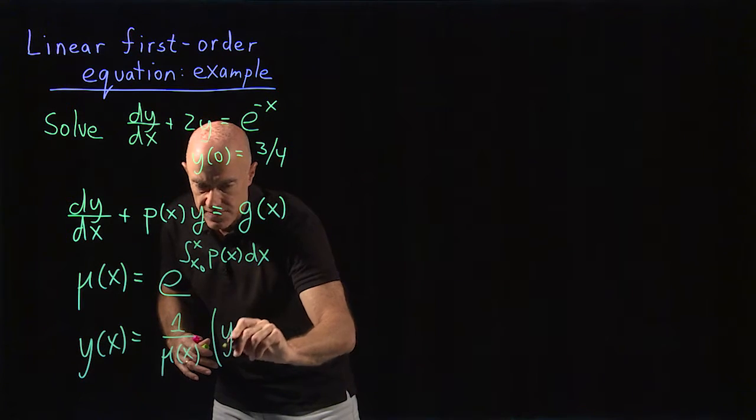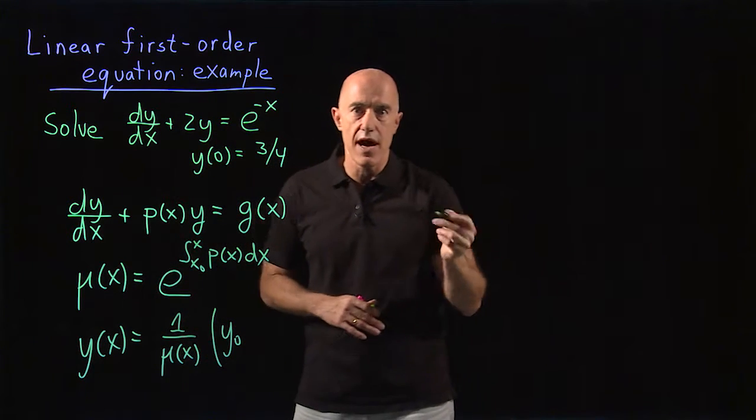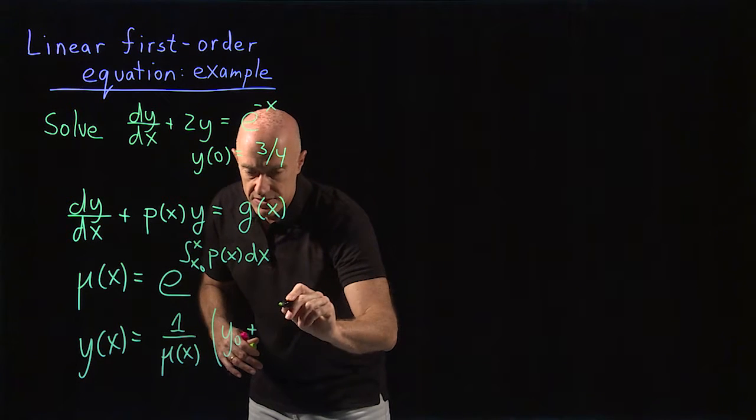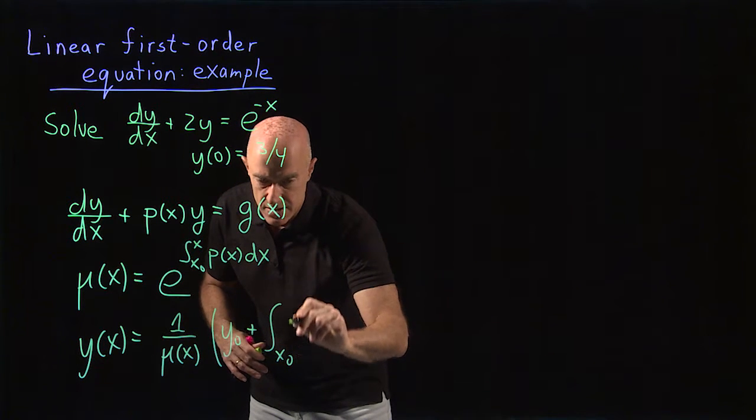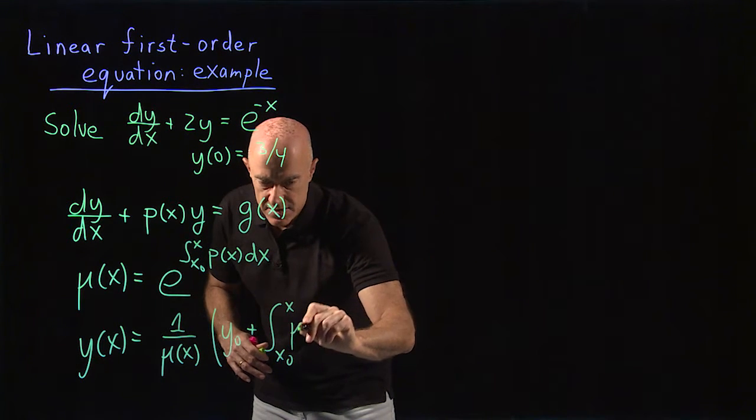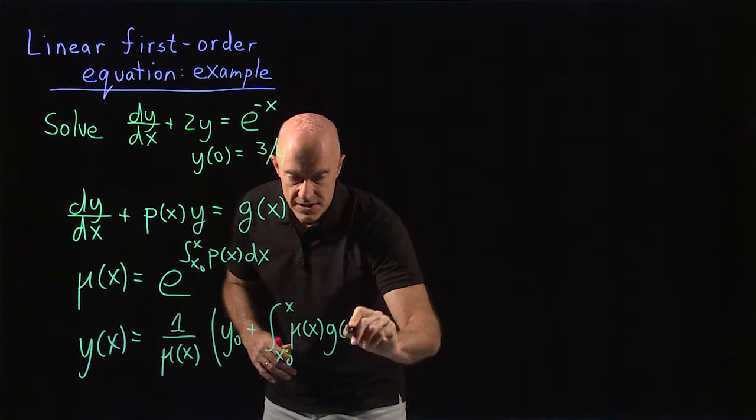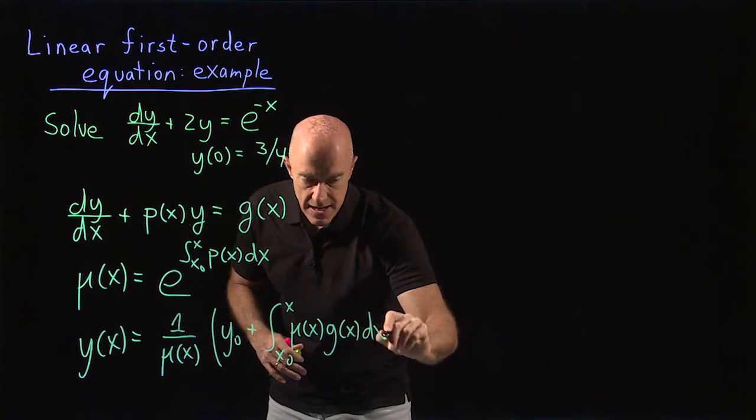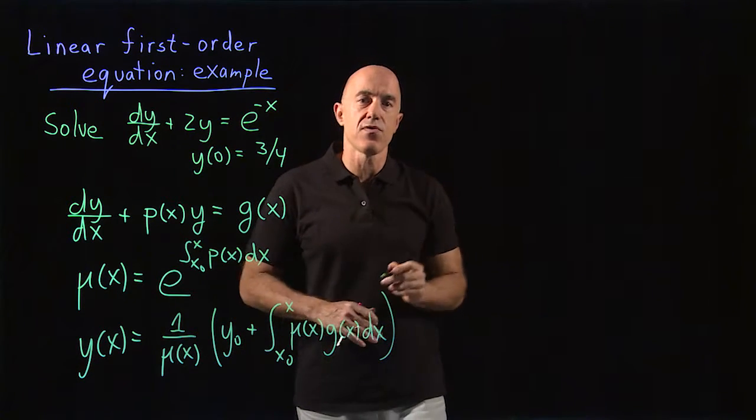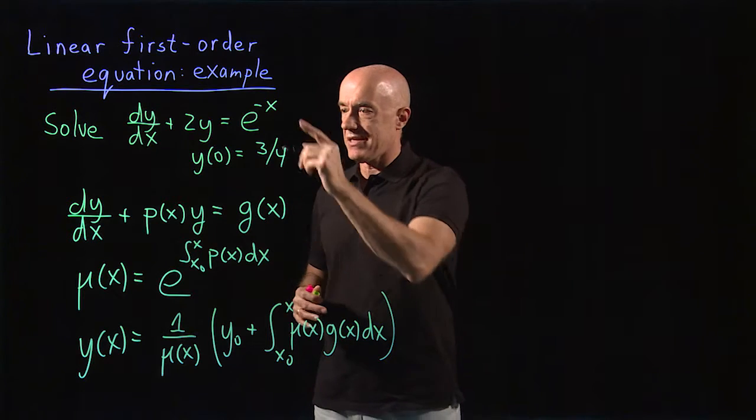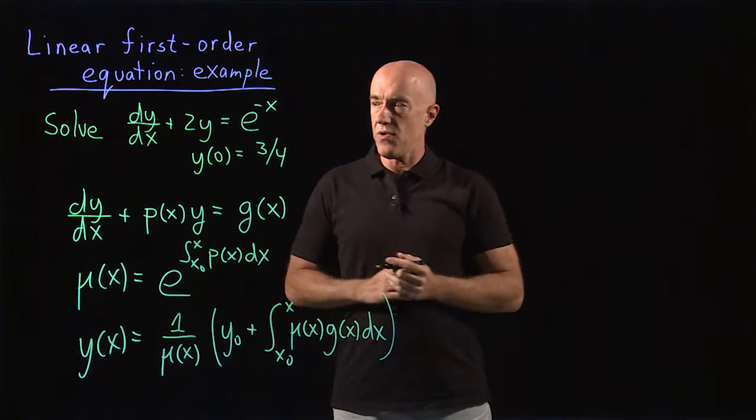times the initial value of y, y at x₀, plus the integral from x₀ to x of the integrating factor times the right-hand side, g(x)dx. That's the formula we derived last time for solving a linear first-order equation.